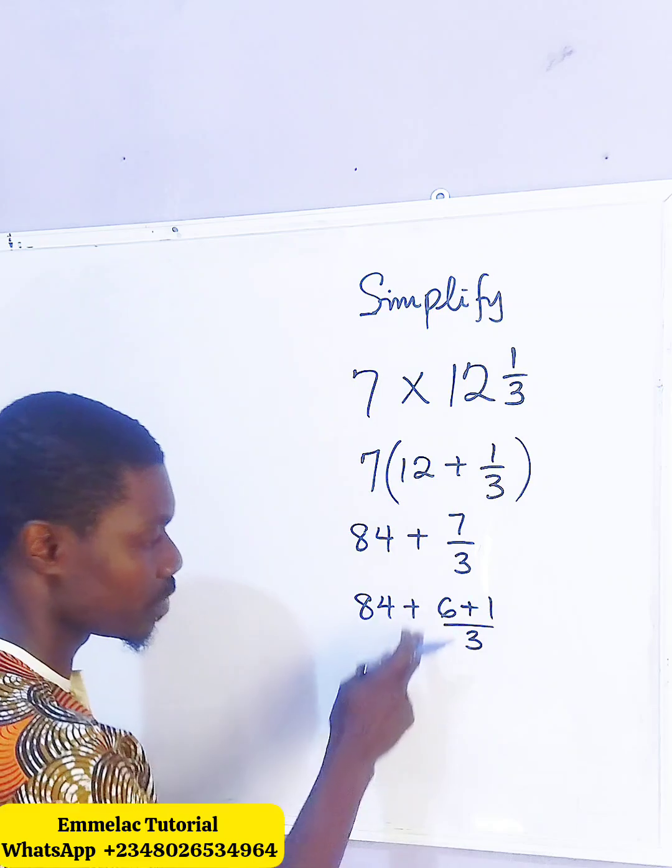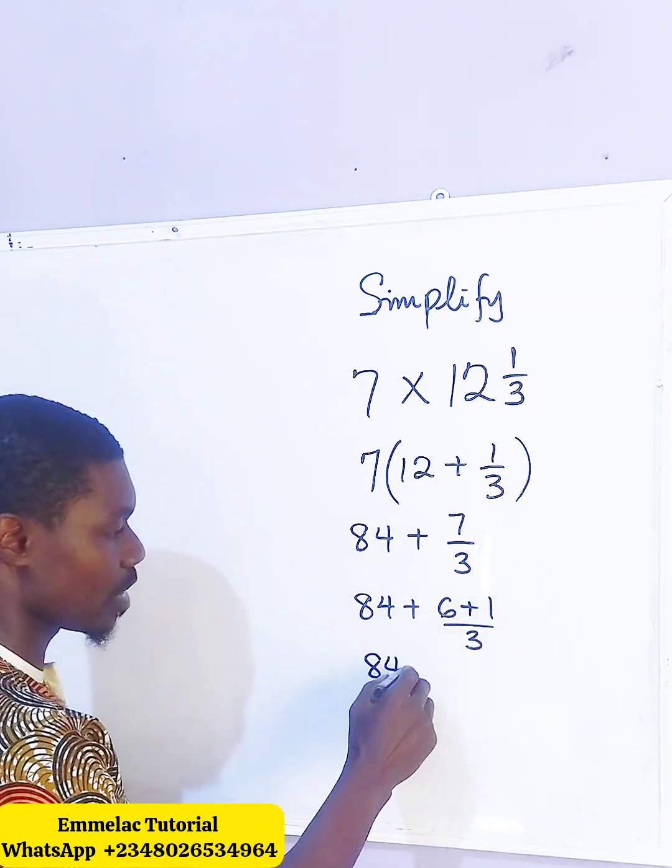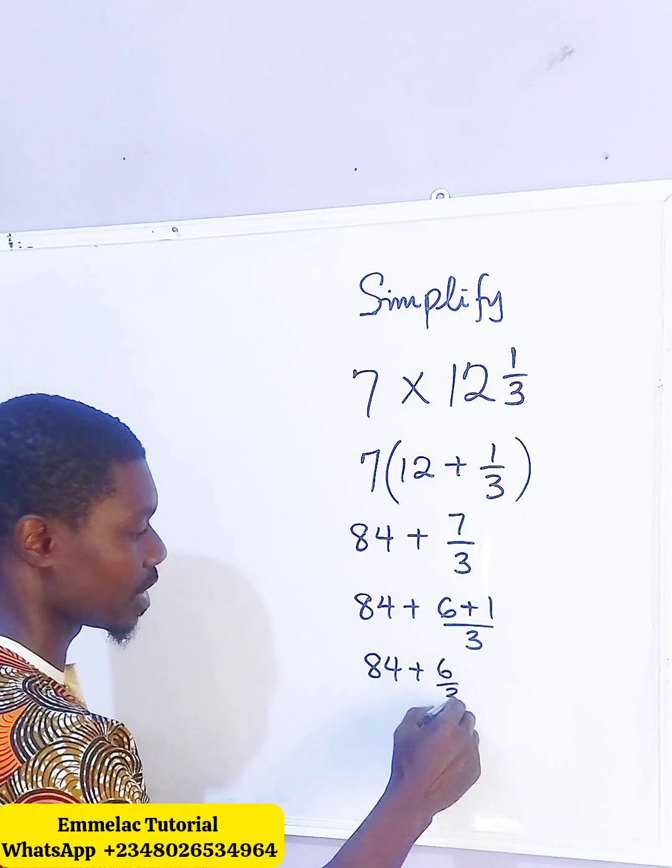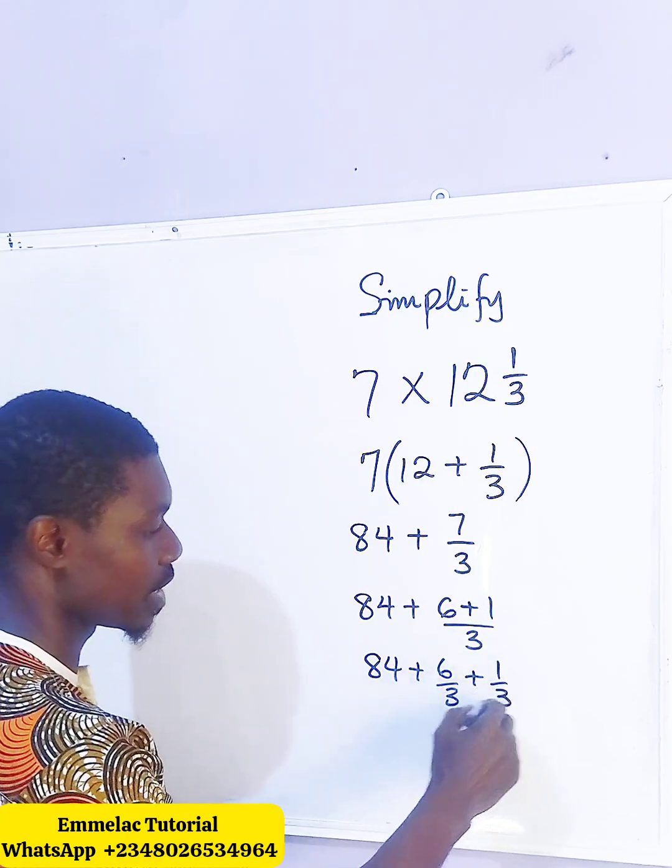Now 3 can also be distributed to 6 and 1. 84 plus 6 all over 3 plus 1 all over 3.